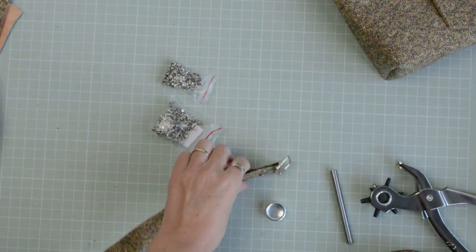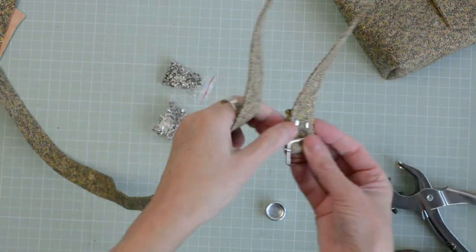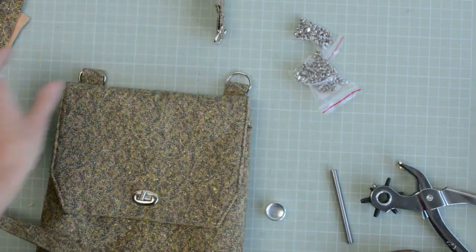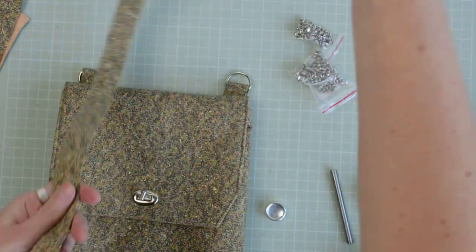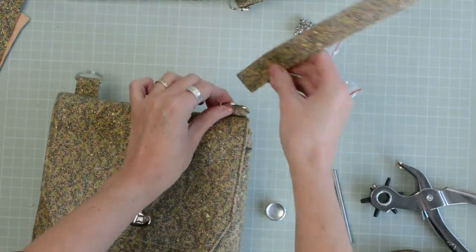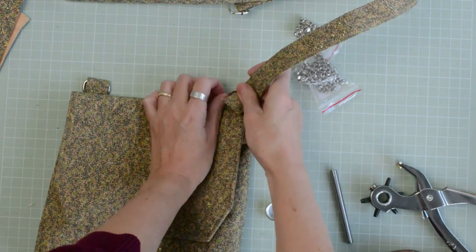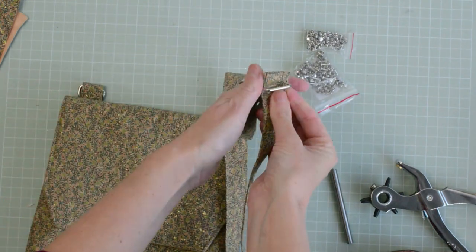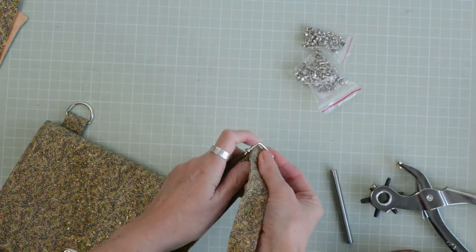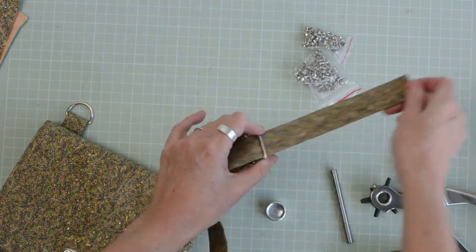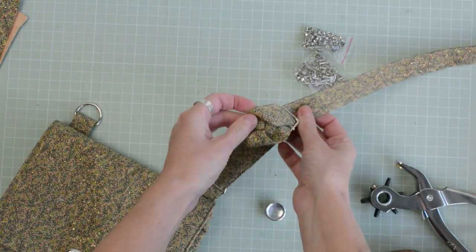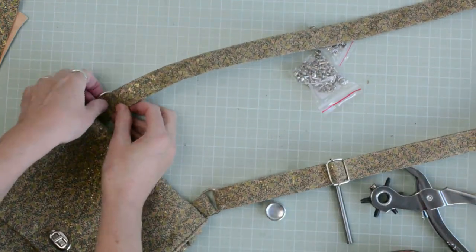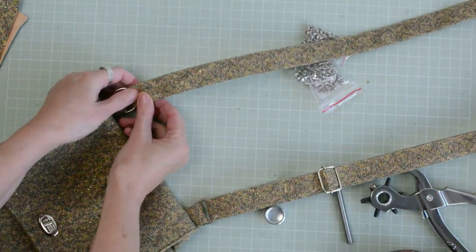As you can see, I've already threaded the strap through the slider and used double cap rivets to attach it. Now I'm going to thread the strap through one of the D-rings, back through the slider. Here we go through the other D-ring and then I can show you how to insert the double cap rivets.